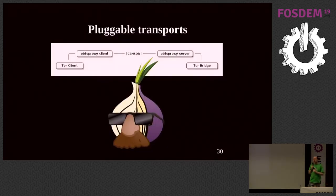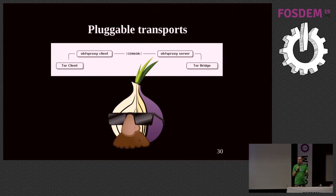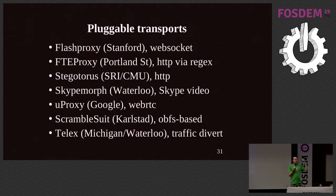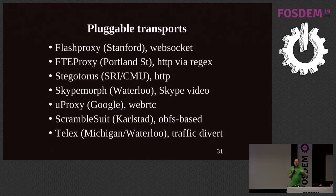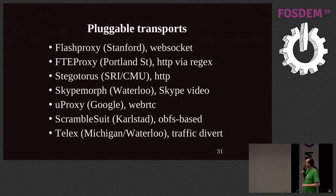The answer we have for DPI is what we call pluggable transports. The TOR side still handles privacy, anonymity, security, and metadata. The pluggable transport transforms TOR traffic in a way that makes it look like something the censor doesn't want to block. There are two main categories: transform it into HTTP, HTTPS, Skype video, or WebRTC so it looks like protocols they're happy to let through; or transform it into a random stream of bytes so they can't figure out the protocol, forcing them to either block everything they can't classify or allow it all through.